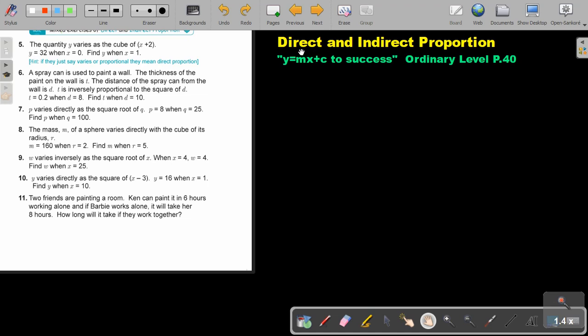In this video we are going to look at mixed examples of direct and indirect proportion and we are going to focus more on method 2, the way of asking it in ordinary level. You will find this on page 40 in the ordinary level mathematics textbook y equals mx plus c to success. I want you just to do number 5 and number 9, and do it on method 2.